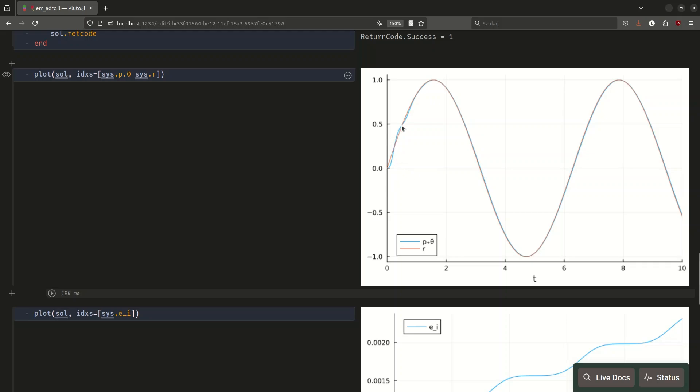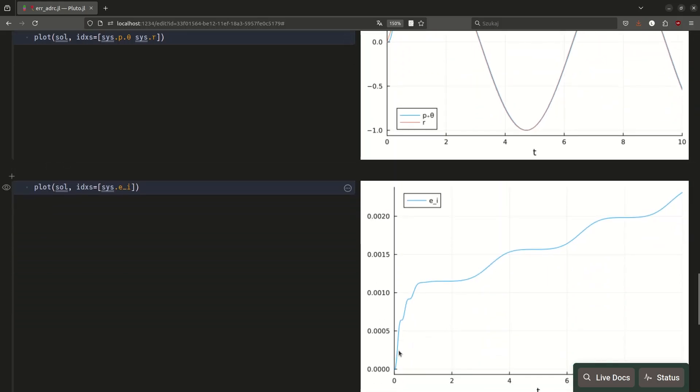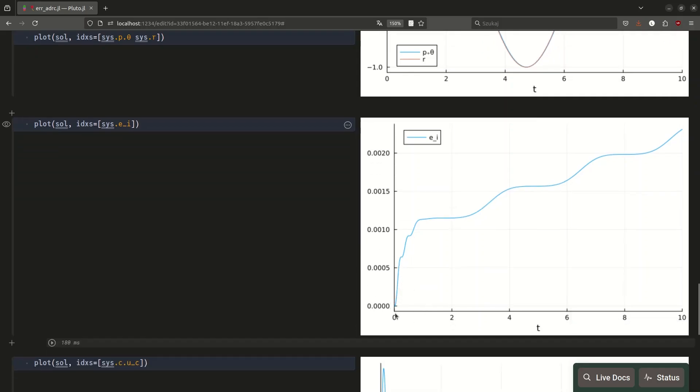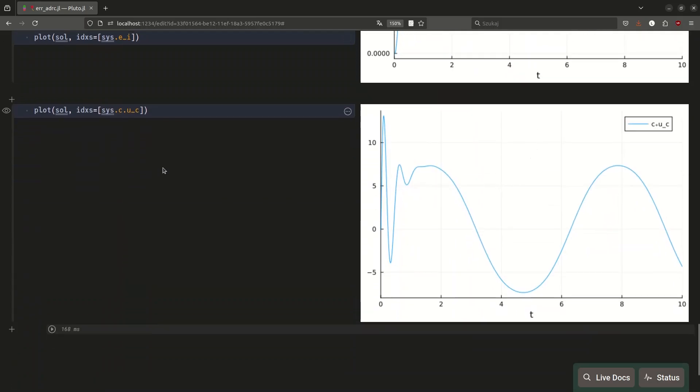And here you can see the actual angular position and the reference, and as you can see, except from a little bit bumpy start, then it tracks the reference signal very nicely, which is also visible on the integrated error plot, where we can see the jump at the beginning, and then it goes up very, very slowly. Nice performance. Also, the input signals look pretty reasonable. They are a little bit bumpy in the beginning when it needs to, let's say, bring the system, stabilize the system, and then it's pretty nice and smooth.